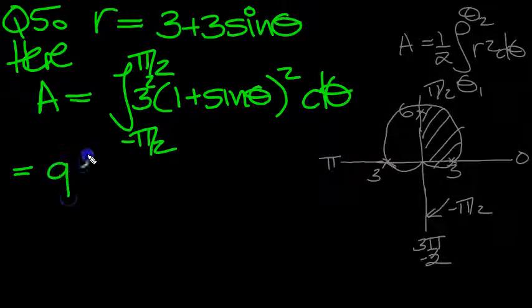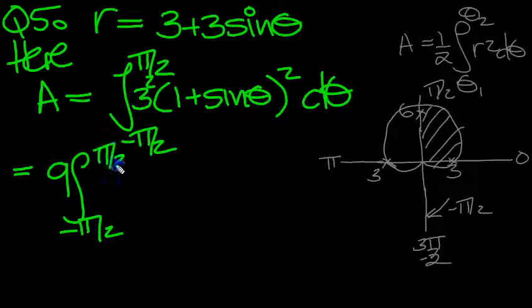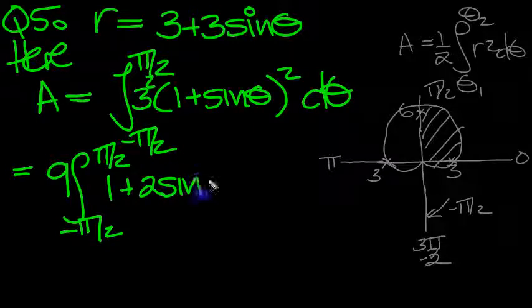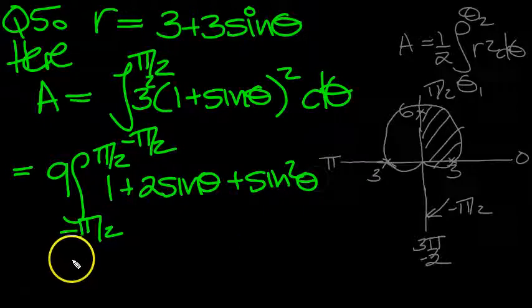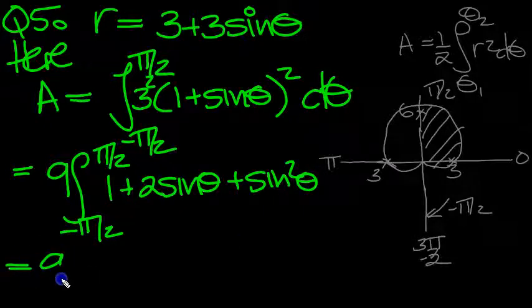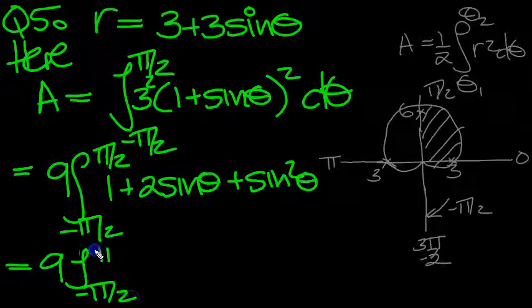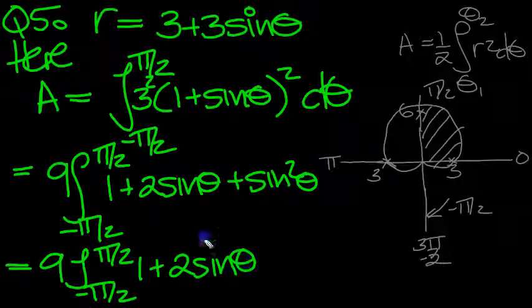So that's equal to 9, minus pi over 2 to pi over 2. Square this then, we get 1 plus 2 sine theta plus sine squared. So that's equal to 9 lots of minus pi over 2 to pi over 2, 1 plus 2 sine theta.